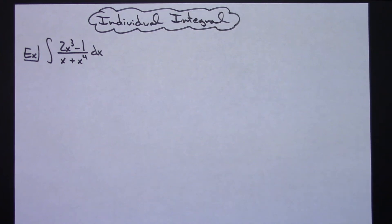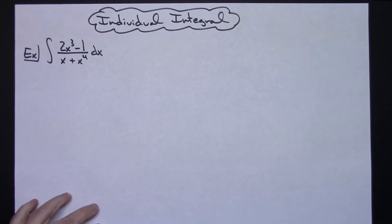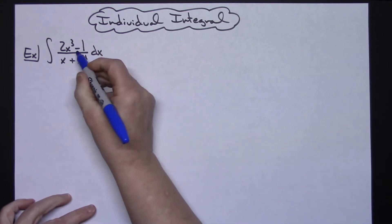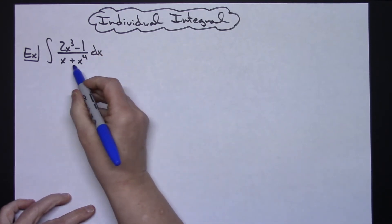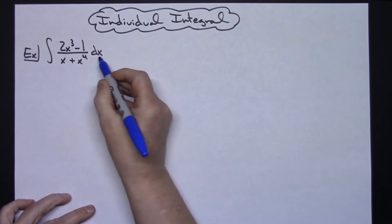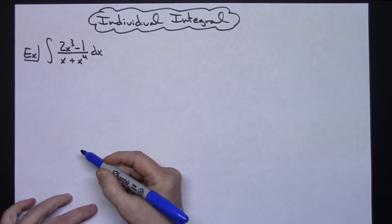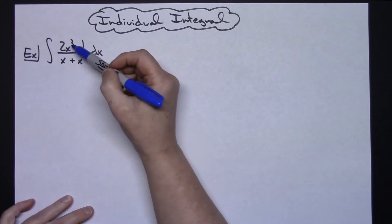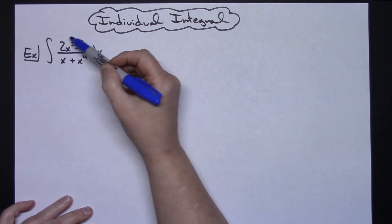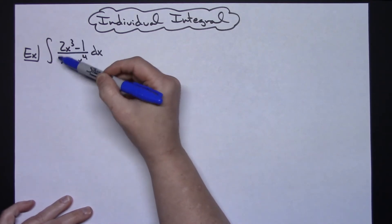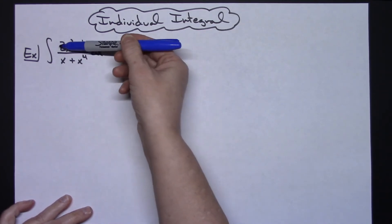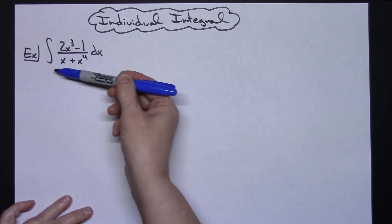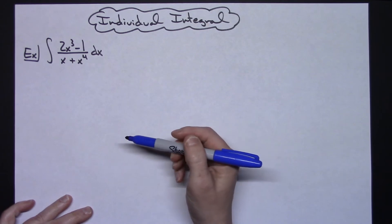In this video I'm going to take a look at an individual integral. I want to take a look at the integral of 2x to the third minus 1 over x, all over x plus x to the fourth, dx. Now we're going to take a look at the fact that this is a rational expression — I have a polynomial in the top and a polynomial in the bottom.